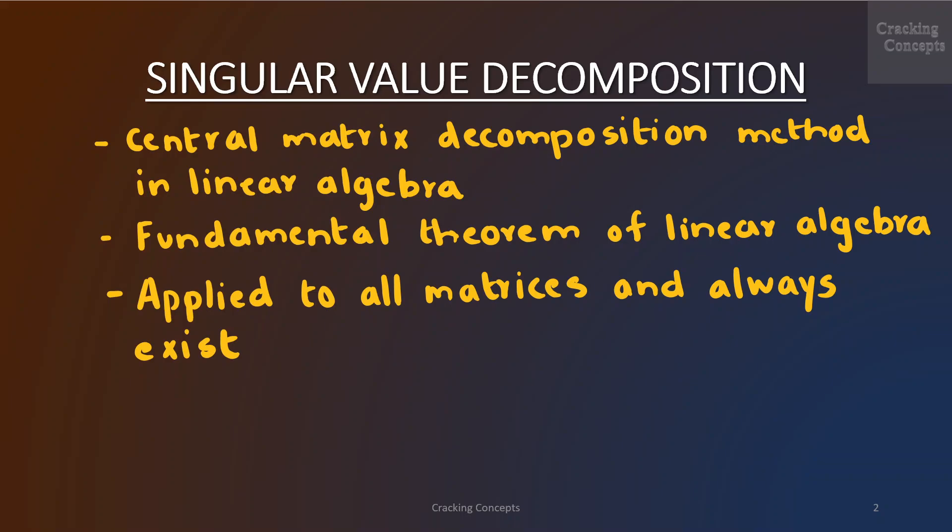Moreover, as we will explore in the following, the SVD of a matrix A which represents a linear mapping φ from the vector space V to W quantifies the change between the underlying geometry of these two vector spaces.